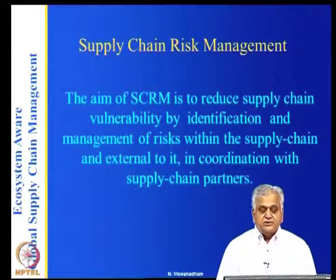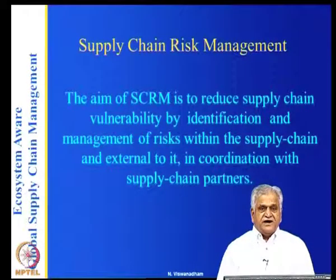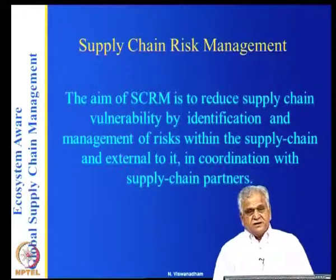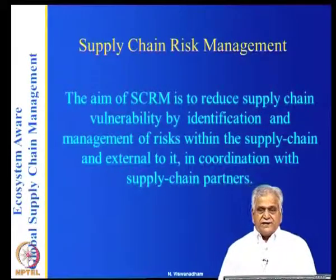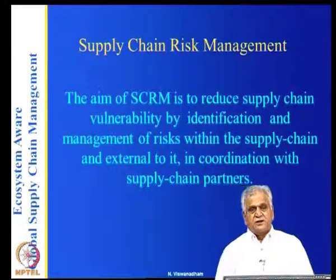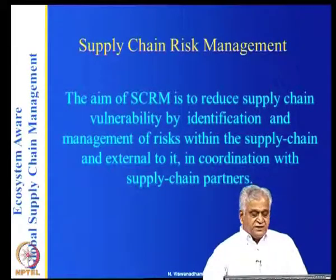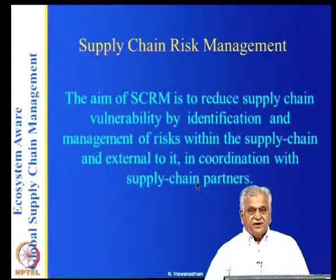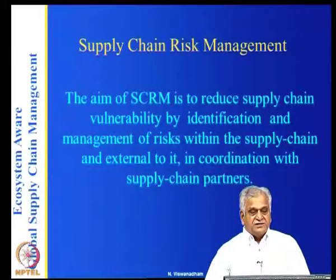The aim of supply chain risk management is to reduce the supply chain vulnerability by identification and management of risk within the supply chain and external to it, in coordination with partners. For example, in the recent financial crisis, governments cooperated with companies to mitigate financial risk — the United States government helped auto companies, banks, and other companies come out of the crisis. The key points are: identification of risk, identifying the magnitude of the risk, and coordinating with partners to handle the risk.